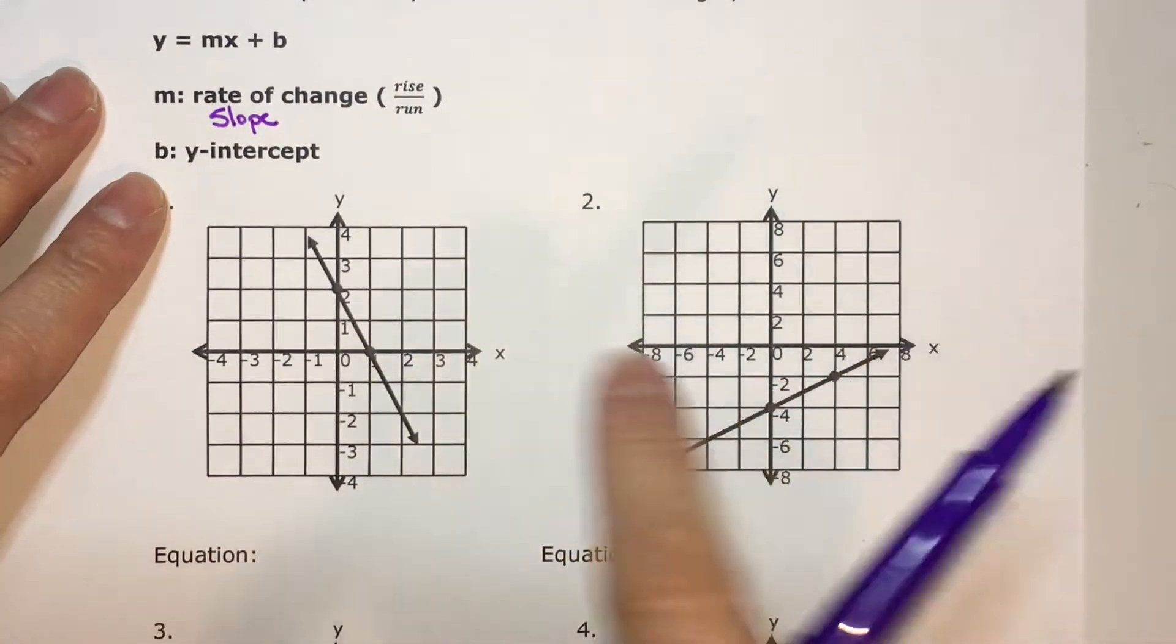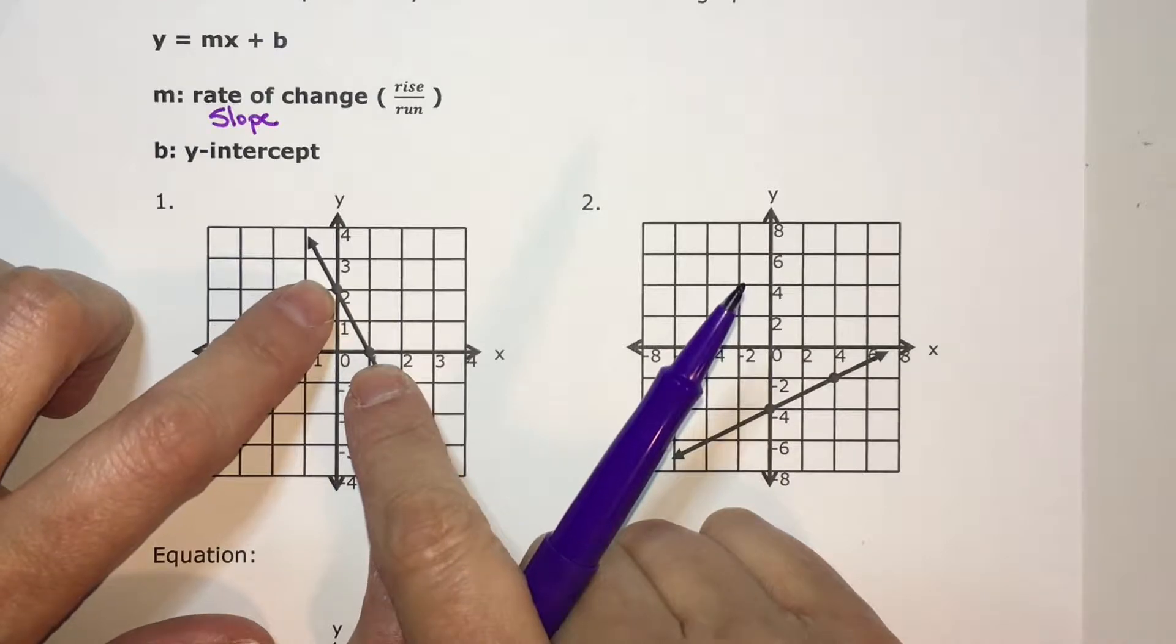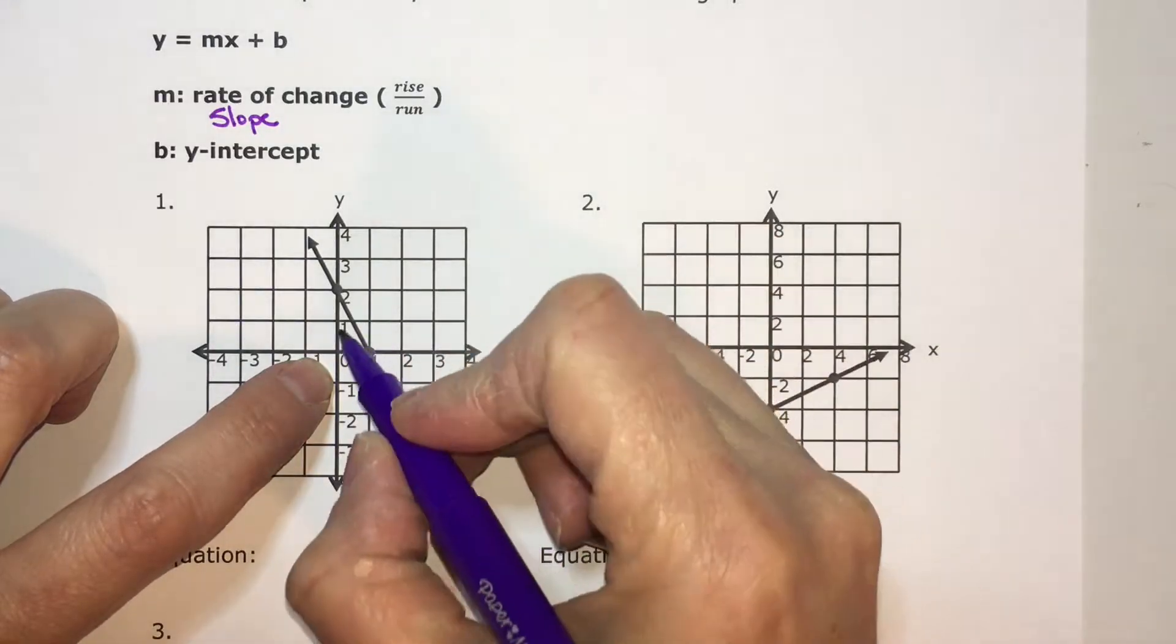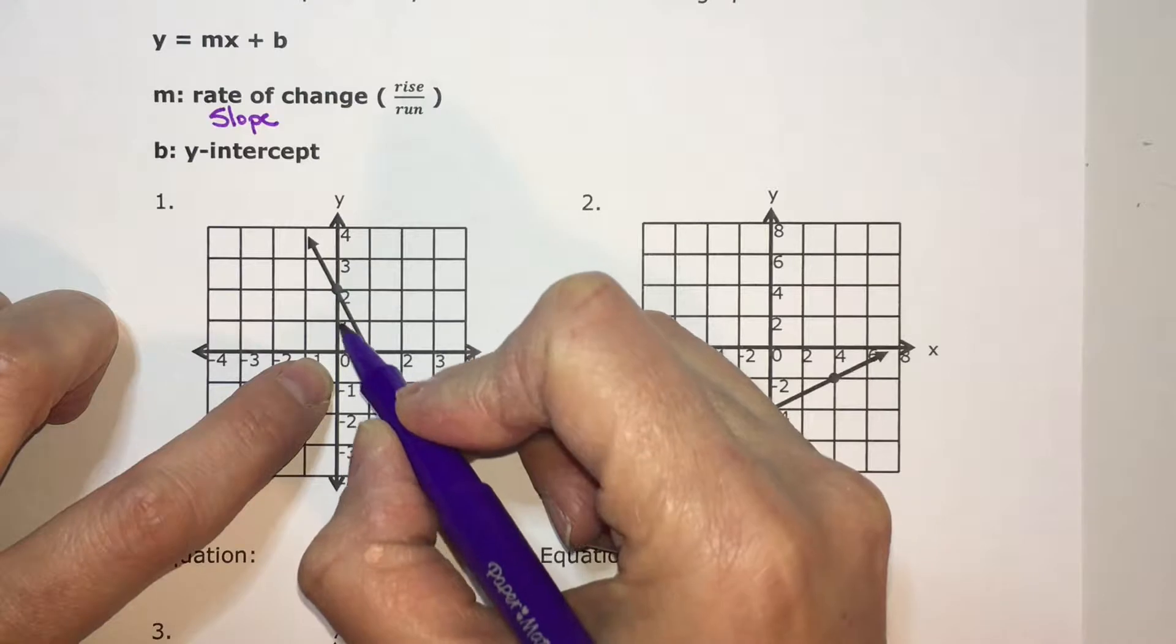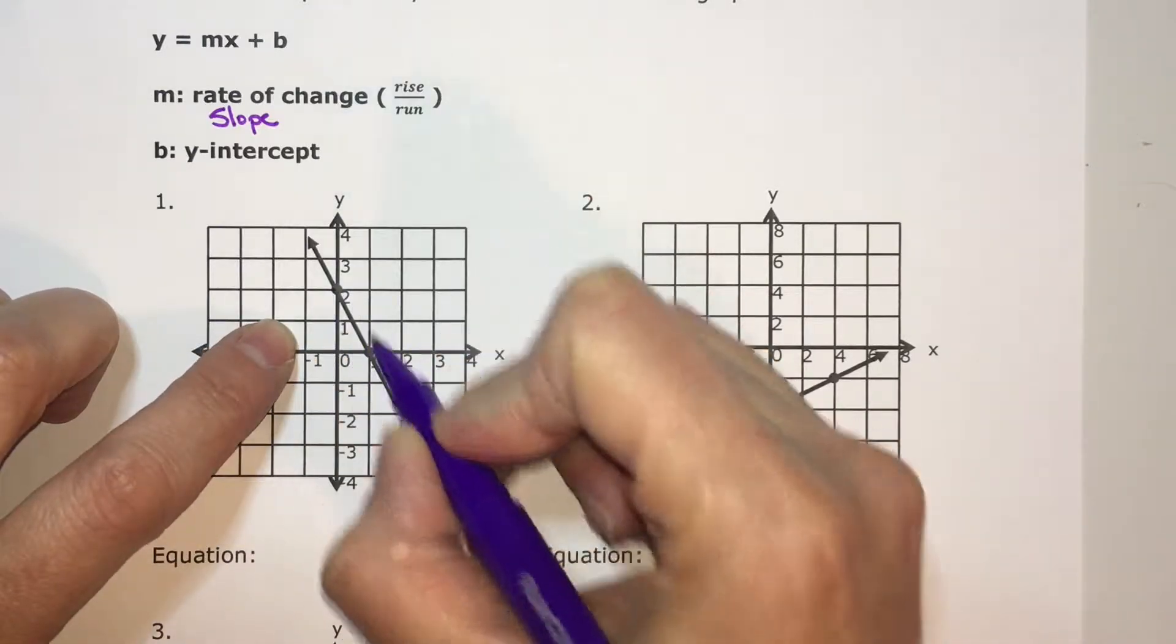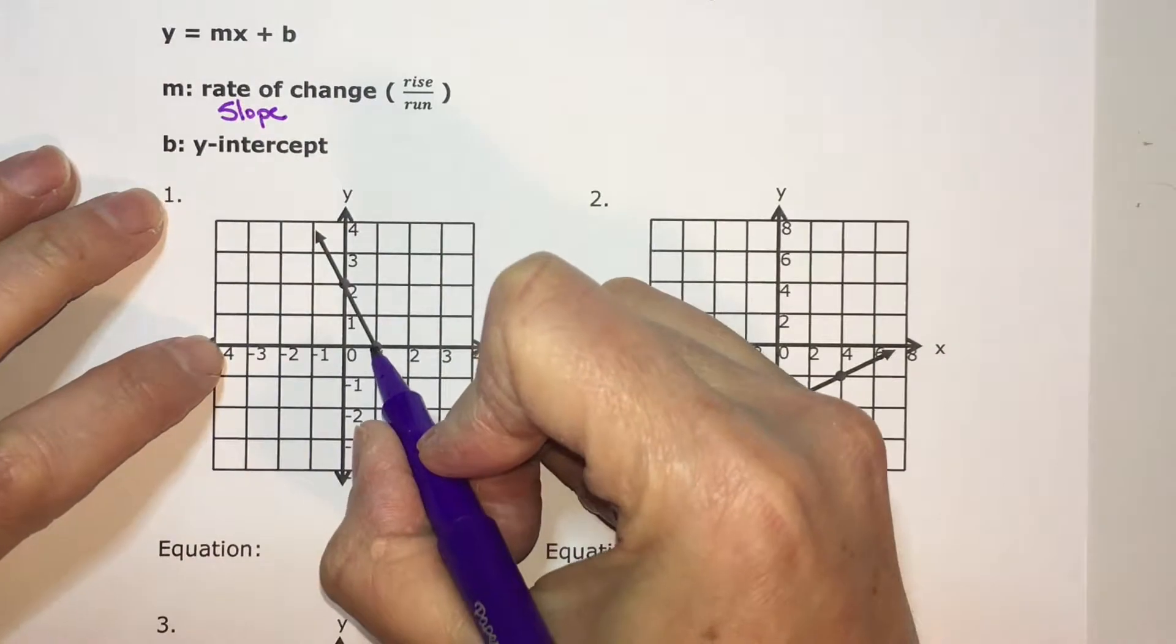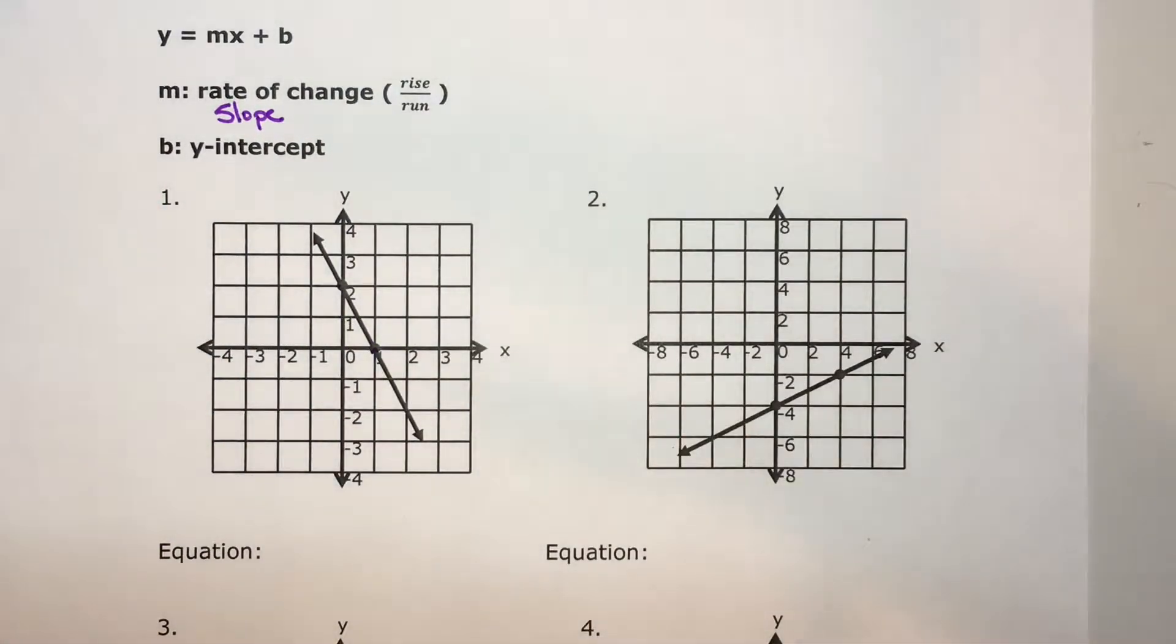In order to find it for a graph, you need to first identify two points where your graph goes through the grid work on the coordinate grid. This wouldn't be a point I could choose because it's not intersecting at a spot where the grid work intersects. You're given two points here, but just know if you're given a line without two points, you can always find where dots would go. It's just where it intersects with the grid work.